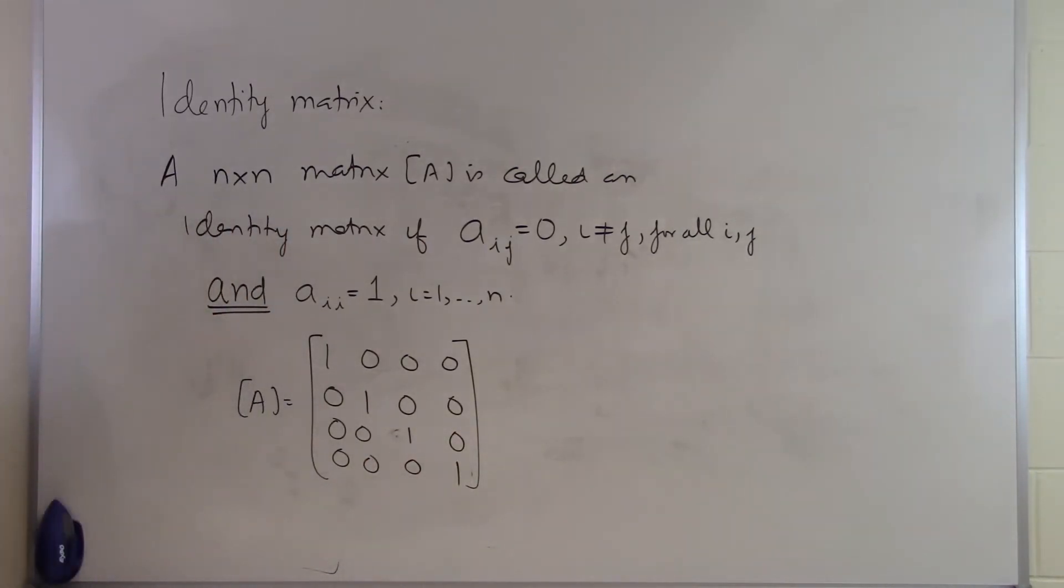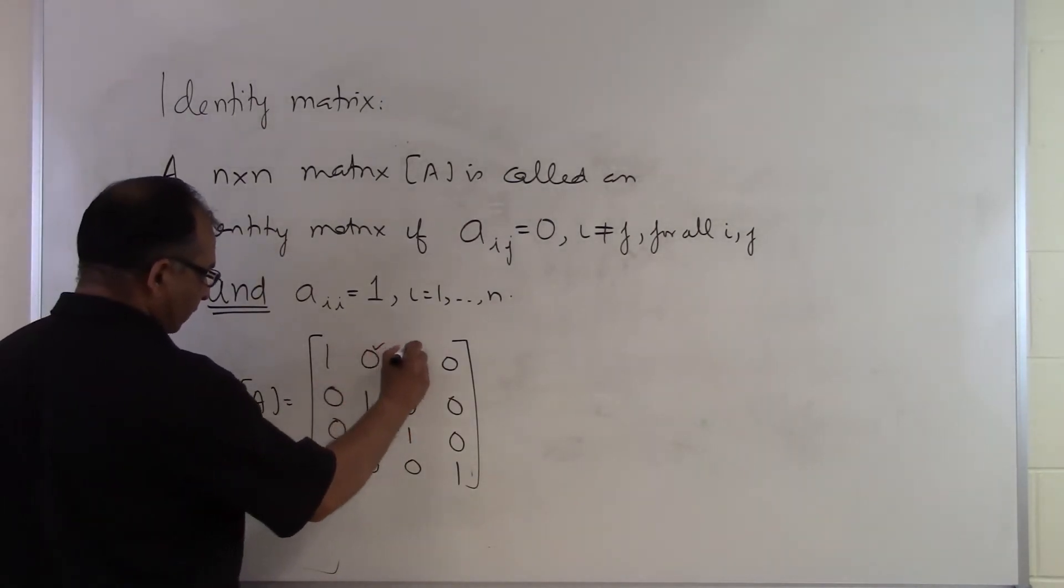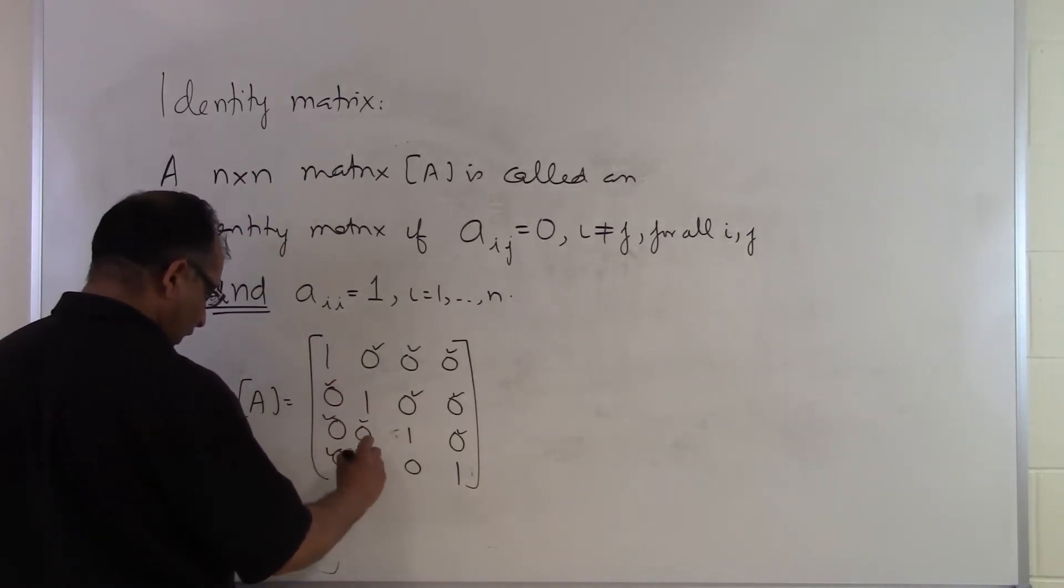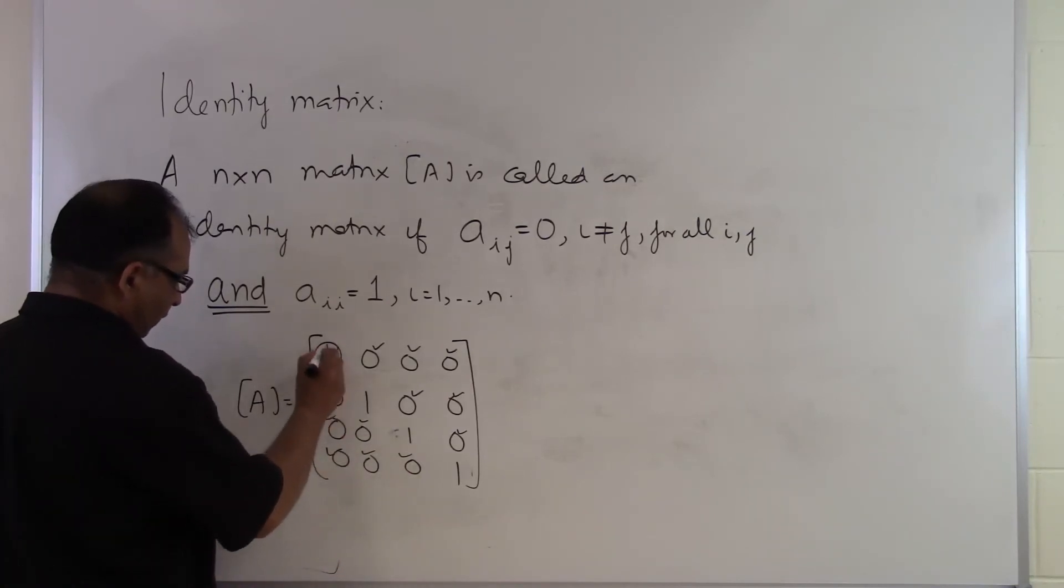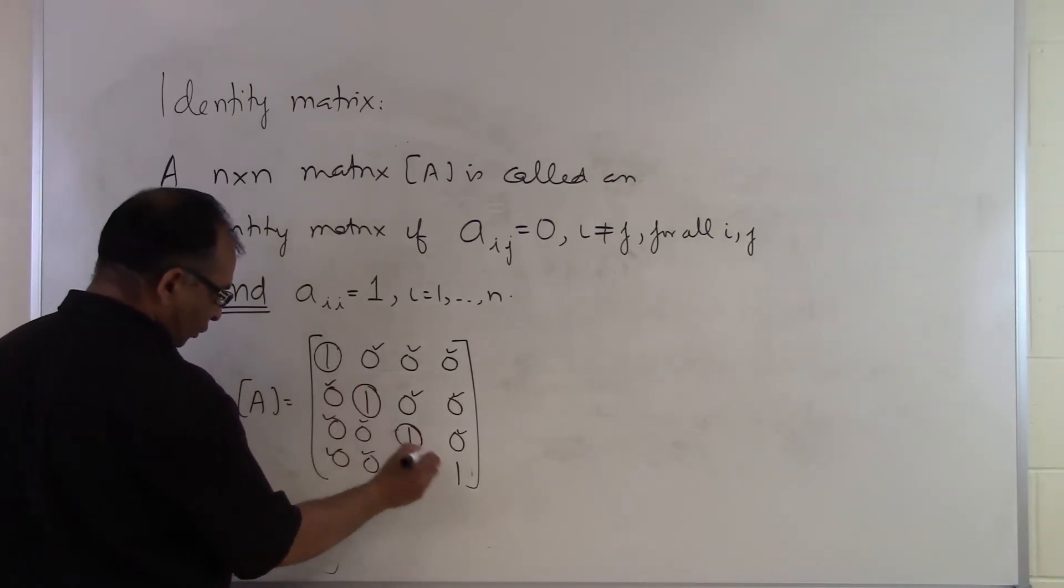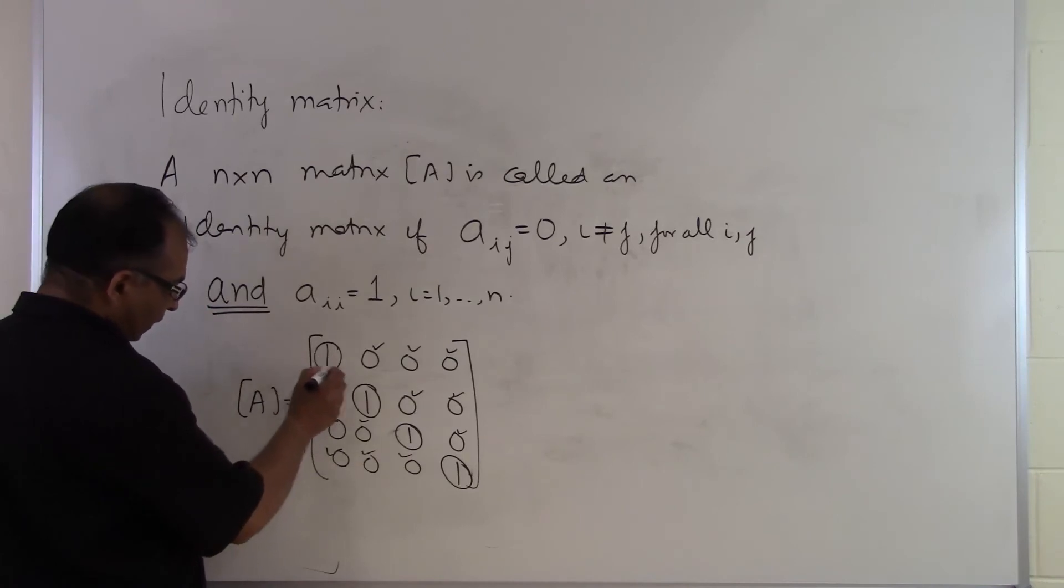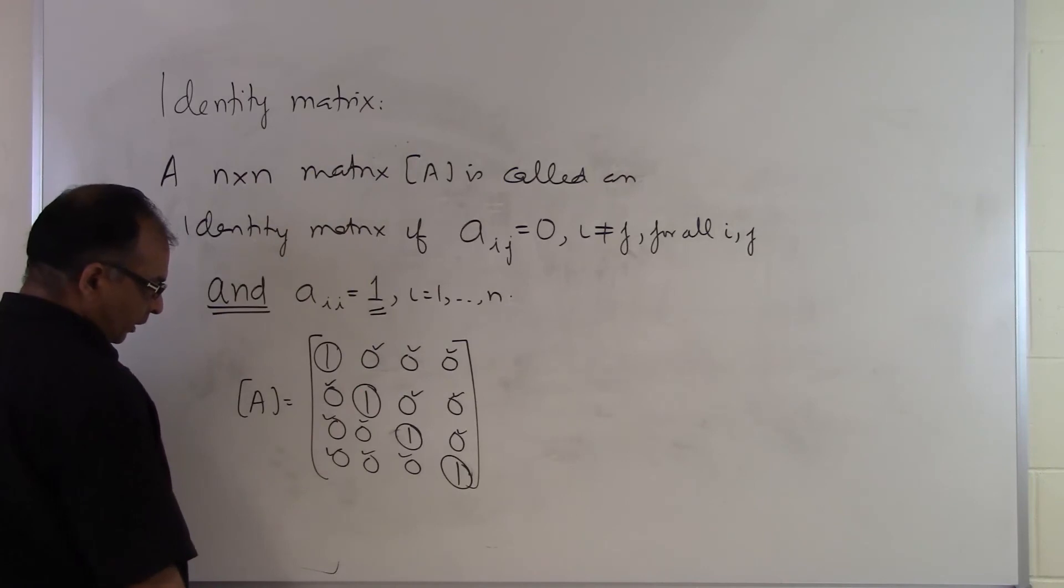So that's an identity matrix because what you are finding out here is that any of the elements which are not on the diagonal, they are zero. That's what we mean by i not equal to j. If you look at the element numbers of these elements, you will find that the row number is not the same as the column number. But whenever the row number is the same as the column number, which are also the terms of the diagonal elements, here you are finding out that you only have one there. So that's what we mean by an identity matrix.